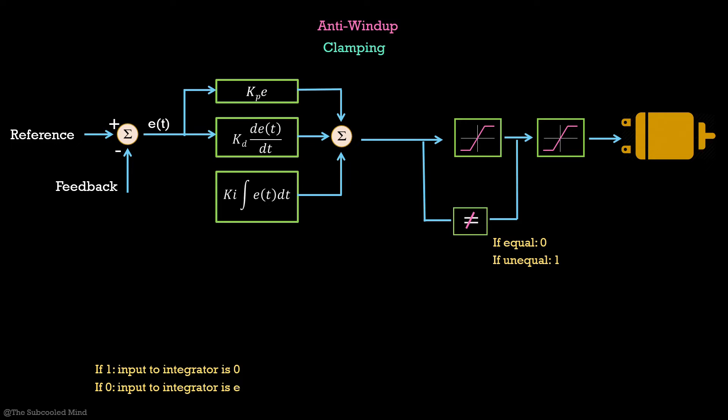Over here, you see there are two saturation blocks. The first one is the saturation for the PID output and the second one is the hardware saturation. For example, the hardware will itself not allow the voltage to go above 24V.